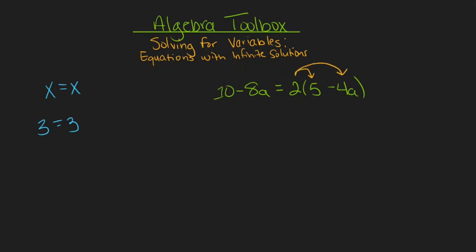So my first step will be to distribute this 2 to both the 5 and the negative 4a in the right side of the equation. This will give me 10 minus 8a equals 2 times 5 is 10 and then 2 times negative 4a will give me negative 8a.